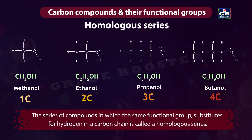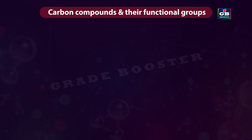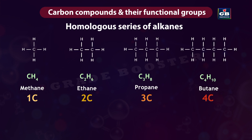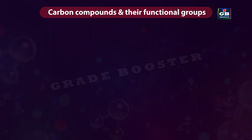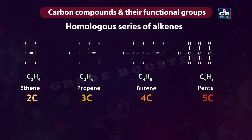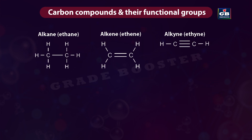The series of compounds in which the same functional group substitutes for hydrogen in a carbon chain is called a homologous series. The homologous series of alkanes includes methane, ethane, propane, and butane. The difference between each of these compounds is the difference in the number of CH2 units. The homologous series of alkenes includes ethene, propene, butene, and pentene.